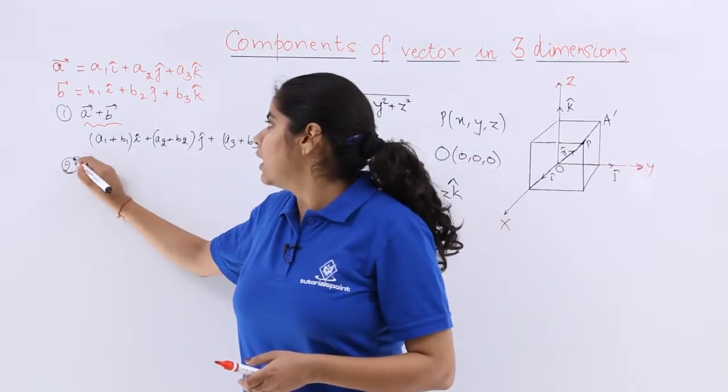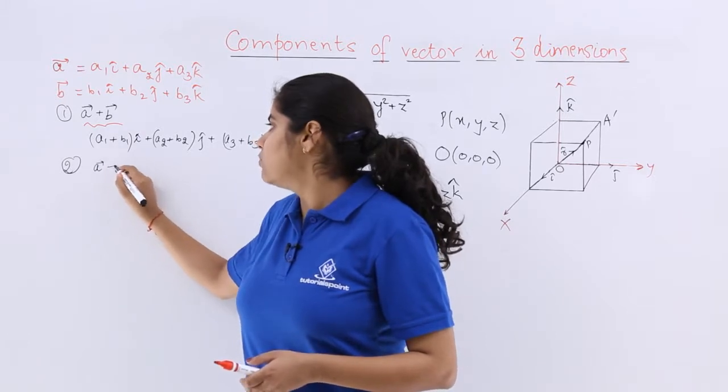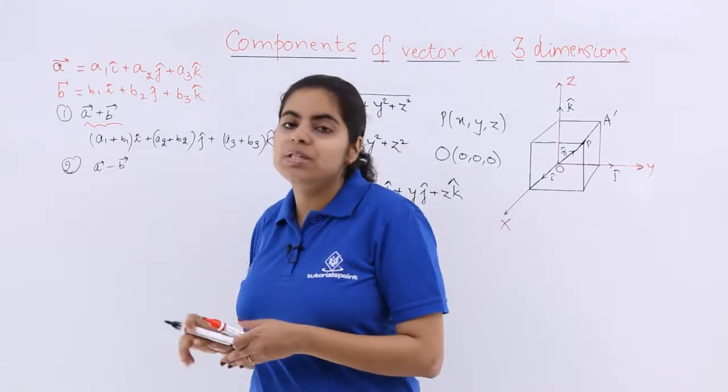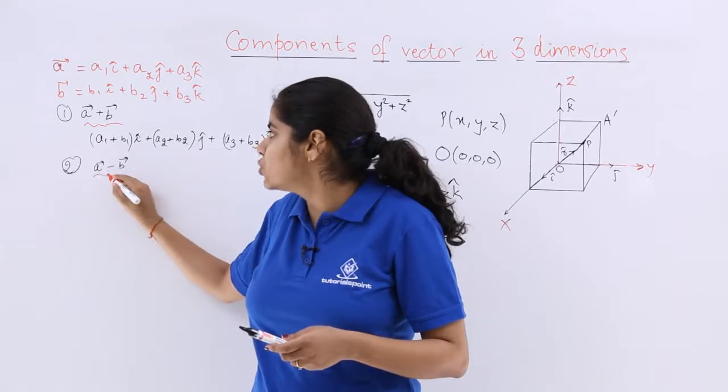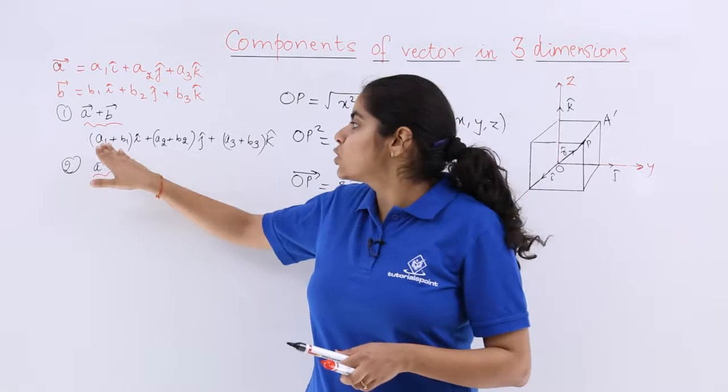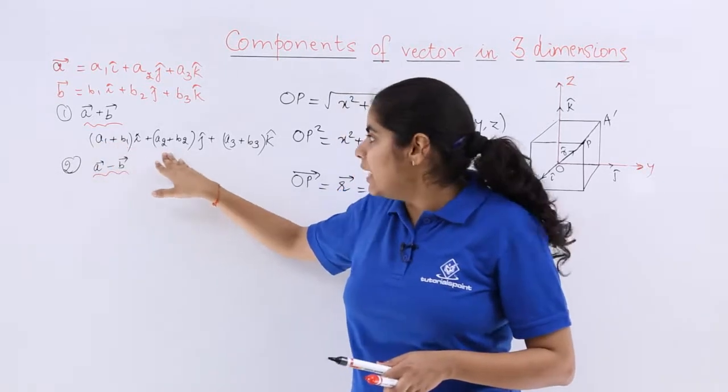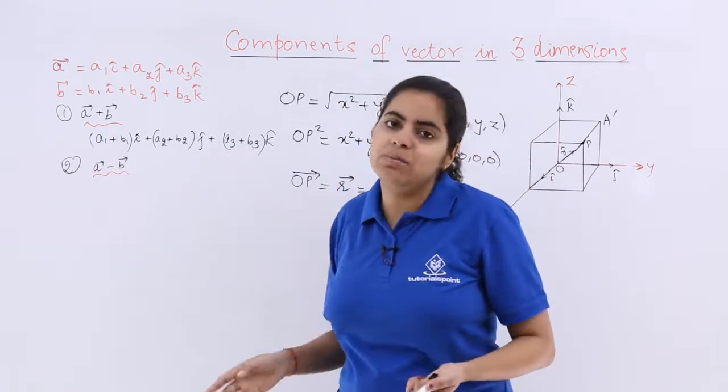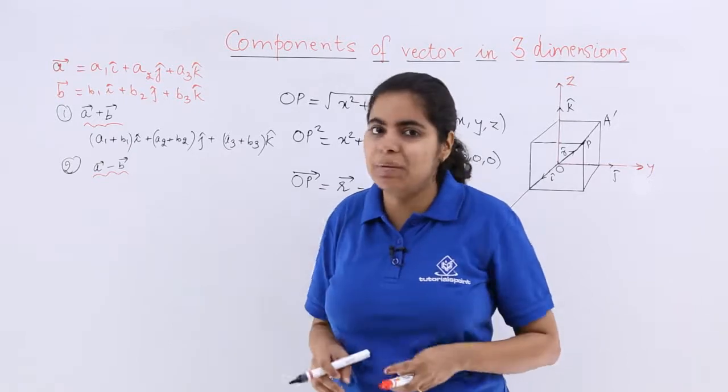Next I have to talk about a minus b vector. If I am interested in subtraction instead of addition, then what to do? The only difference will be that it is a minus b. So (a1-b1) i cap, (a2-b2) j cap, (a3-b3) k cap. That's the only difference.